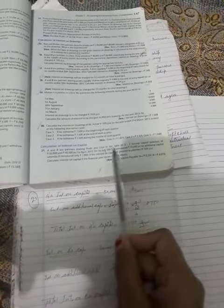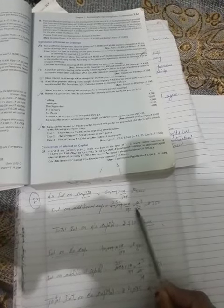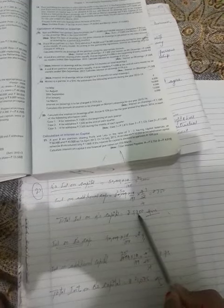And 10,000 was introduced on 1st July. From 1st July till 31st March, there are a total of 9 months. So here, 10,000 multiplied by 10 upon 100 multiplied by 9 upon 12. The answer is 750. So the total interest on A's capital is 5,000 plus 750, that is 5,750.